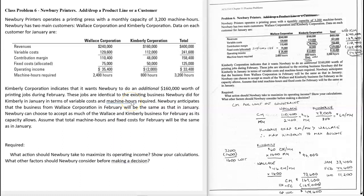This is Newberry Printers, and this is about two things: adding or dropping a product line, but also about a constrained resource.